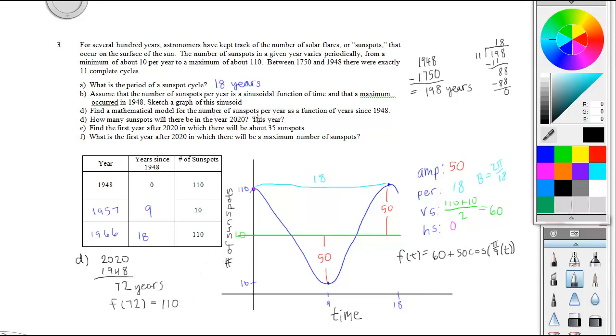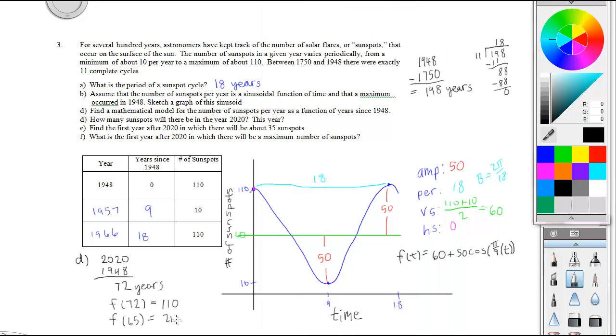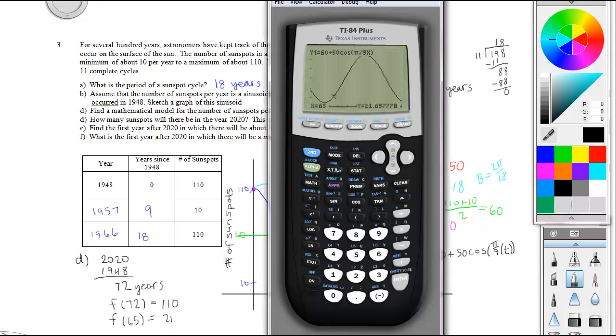It also asks for this year. 2013 minus 1948 is 65 years after 1948. Bring the calculator back up and adjust the window so I can do 65. 2nd calculate value 65, and I get 21.698.